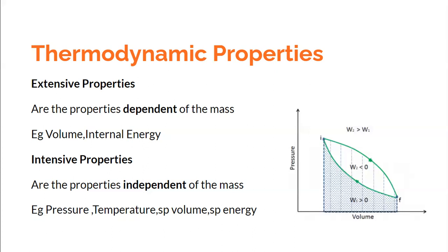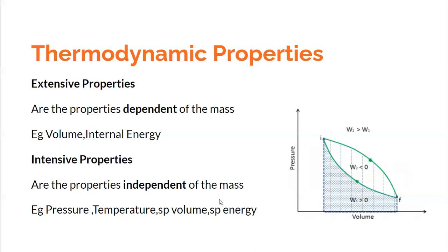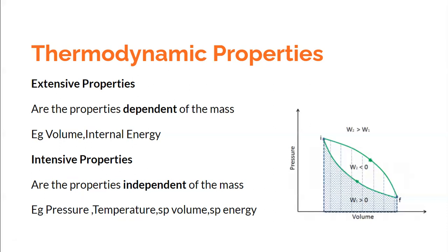Specific properties are also intensive properties. By specific properties, we mean dividing an extensive property by mass. For example, specific volume is volume per unit mass, and specific internal energy is energy per unit mass. When you use specific volume instead of volume, it becomes independent of mass and therefore an intensive property. All specific properties — specific enthalpy, specific energy, specific volume — can be termed intensive properties.